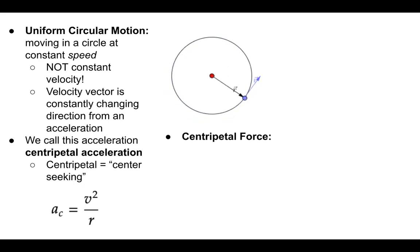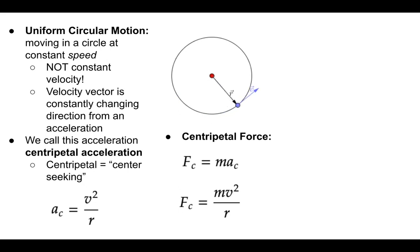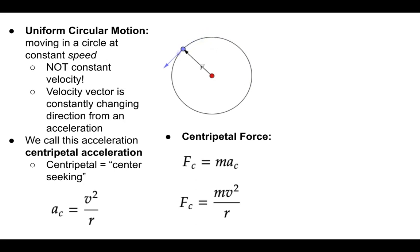Using Newton's second law — net force equals mass times acceleration — we plug in centripetal acceleration and get that centripetal force equals mass times velocity squared over radius: F = mv²/r. There are many different forces that can cause circular motion and therefore act as a centripetal force. I'll talk about that in a little bit and we'll do examples so that can be really clear.